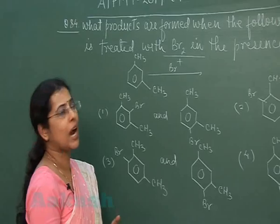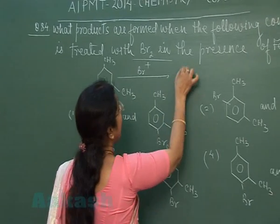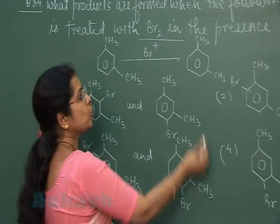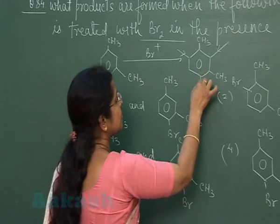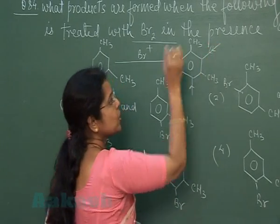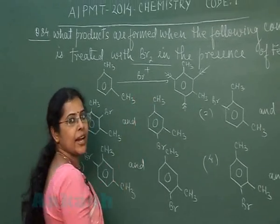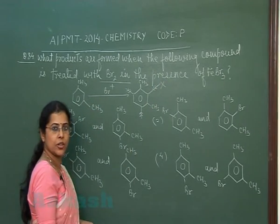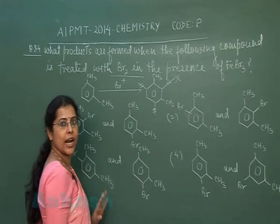The bromonium ion will attack at a position decided by the methyl group. Since alkyl groups are ortho-para directing, we can see that the ortho positions and para position with respect to each methyl group are identified. The bromonium ion can attack only at these positions, but one position is not allowed due to steric hindrance. So the possibility is that the bromonium ion will attack at the other allowed positions.